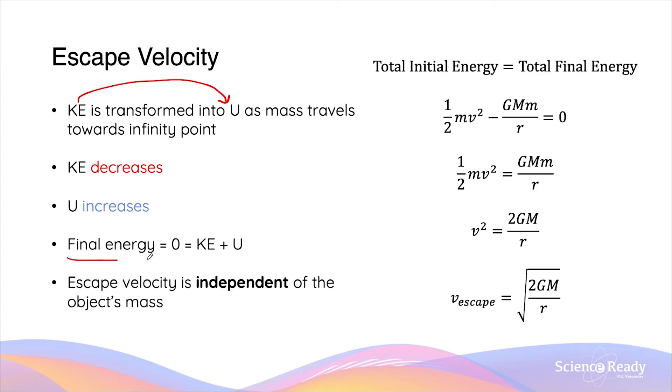We know the final energy of the mass when it gets to this hypothetical infinity point will be zero because both the kinetic energy and the gravitational potential energy will be both zero. If we don't consider any air resistance or any friction, and if we only look at conservative forces, then we can apply the law of conservation of energy and say that the total energy at the very end, which is zero, is also equal to the total initial energy before the mass has started its journey towards the point of infinity.